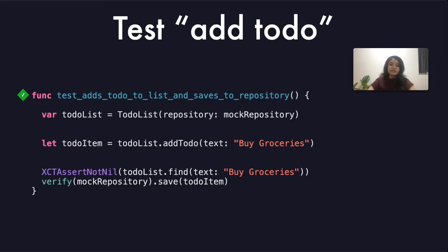Let's try to read it: given I have a new to-do list, when I add a to-do, then the to-do should be present inside the list and must be saved into the appropriate repository.